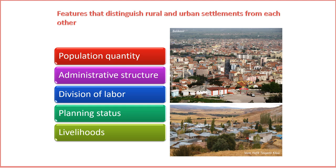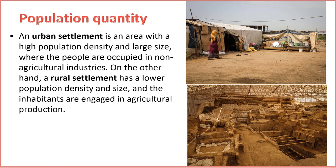In conclusion, the distinguishing features between rural and urban settlements offer us a lens through which to analyze the rich tapestry of human habitation. Understanding these characteristics enhances our appreciation for the diverse ways in which communities shape their identities based on their settlement type. Population Dynamics in Urban and Rural Settlements. Today we explore a fundamental aspect that shapes the very essence of human habitation: population quantity. The contrast between urban and rural settlements regarding their population dynamics is a key factor in understanding the diverse landscapes of human communities.